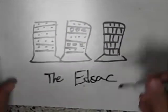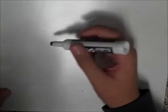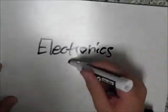Electronic Control Company, the first computer company, was founded in 1949 by J. Presper Eckert and John Motchley, the people who made the ENIAC.